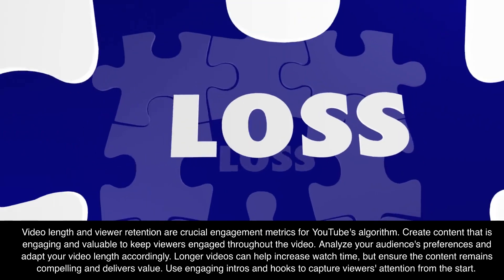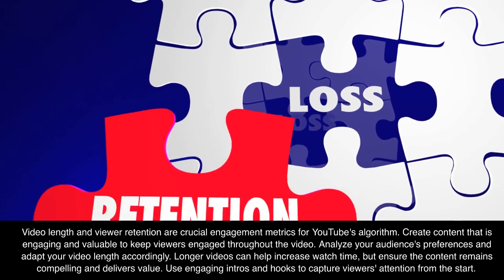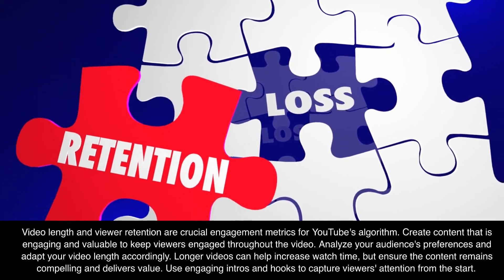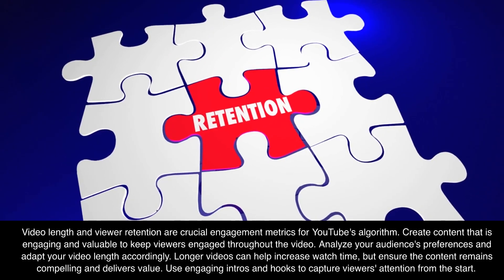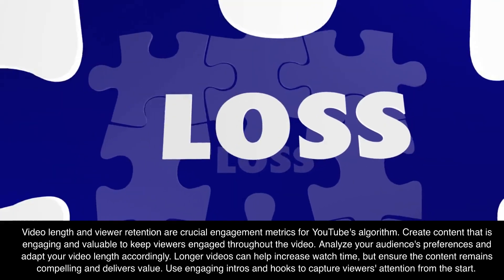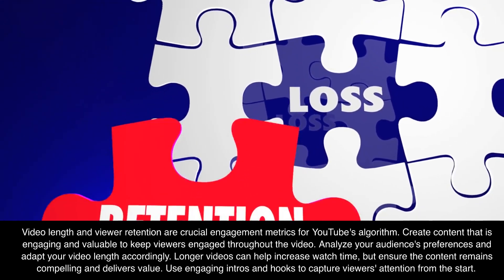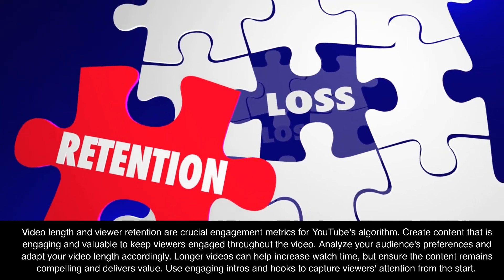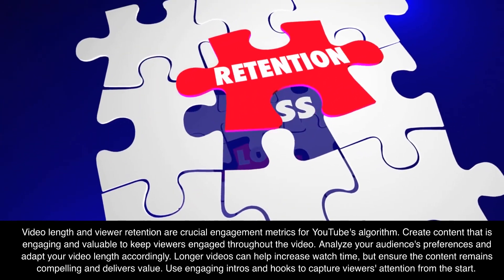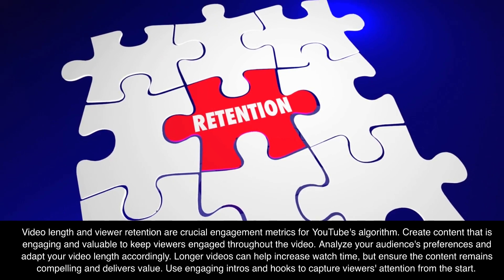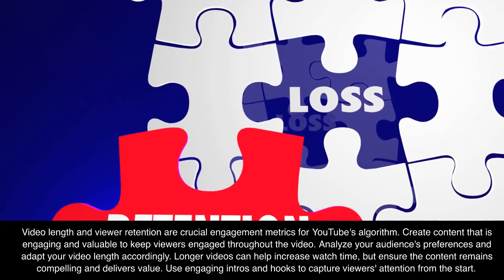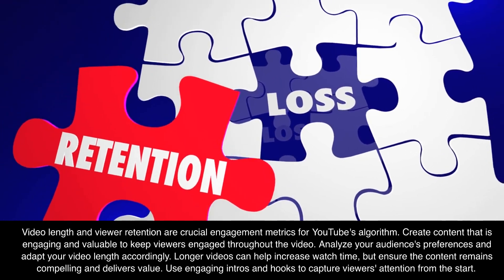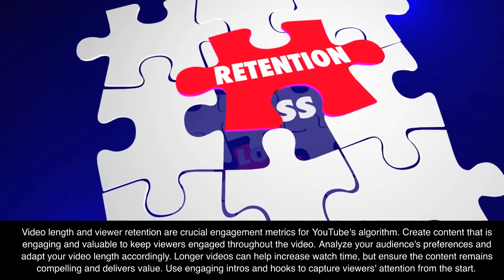5. Video Length and Retention. Video length and viewer retention are crucial engagement metrics for YouTube's algorithm. Create content that is engaging and valuable to keep viewers engaged throughout the video. Analyze your audience's preferences and adapt your video length accordingly. Longer videos can help increase watch time, but ensure the content remains compelling and delivers value. Use engaging intros and hooks to capture viewers' attention from the start.